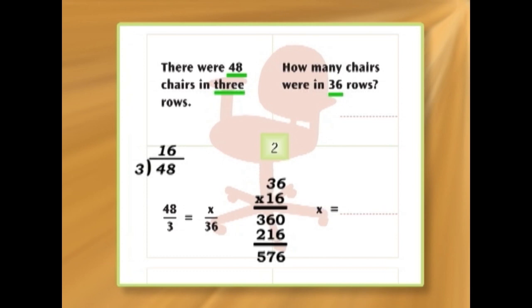So, we know there are 576 chairs in 36 rows. Whew! That's all for now. Bye.